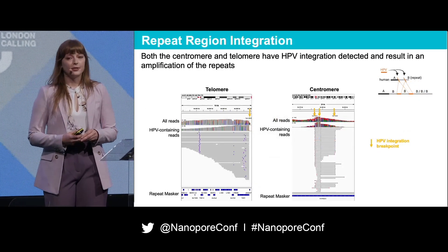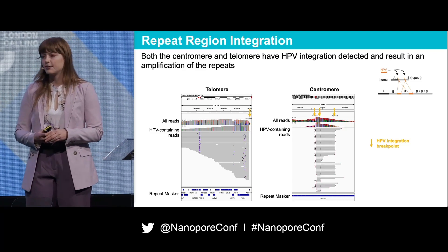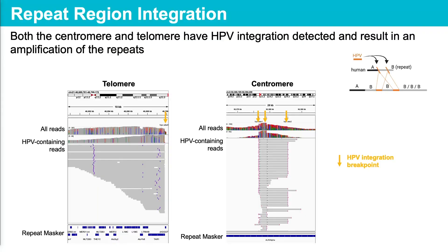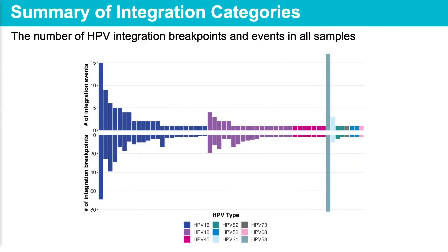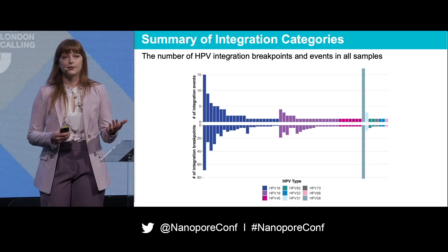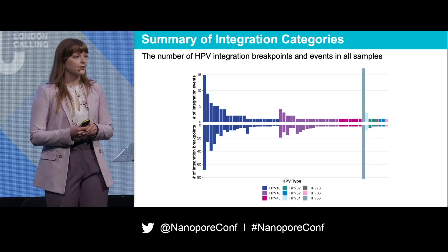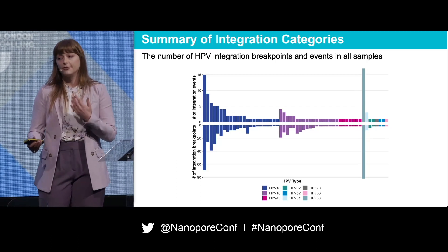Integration within repeat regions has been reported in other studies, and we confirmed the presence with long reads. In two examples, integration is occurring within the telomeres and within the centromeres. The repeat masker track shows that the integration breakpoints are in the telomere in the TAR-1 repeat and in the centromere in the ALR-alpha repeat, and these integrations also associate with the expansion of these repeats. There are certain samples that are hyper-integrated compared to others, while some only have one integration event. The most integrated sample in this cohort had about 18 integration events made up of over 80 breakpoints.